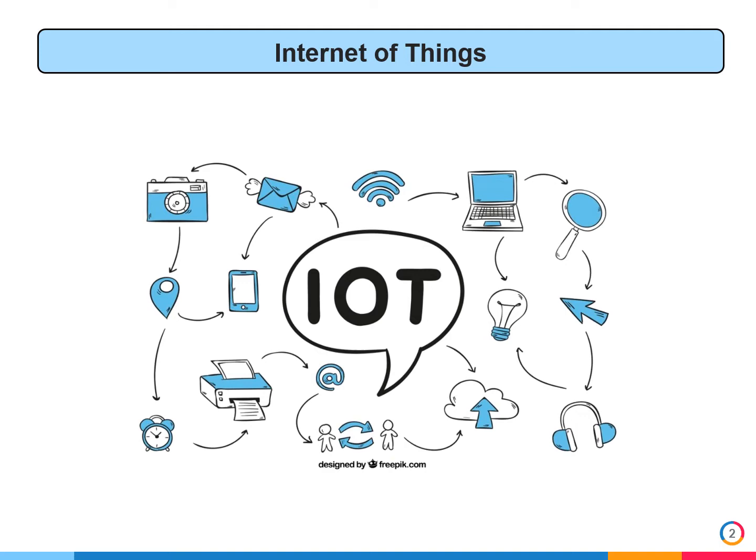Internet of Things is an emerging concept that draws attention from both academics and industries. One important part of the IoT device is its communication modules, responsible for connecting the IoT device with the cloud and also with other devices. Wireless communication such as Wi-Fi, Bluetooth, and LoRa are usually employed in IoT due to easy installation.